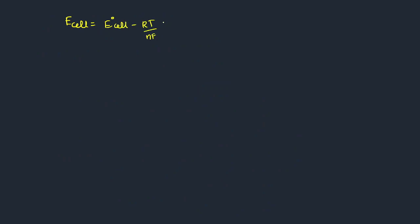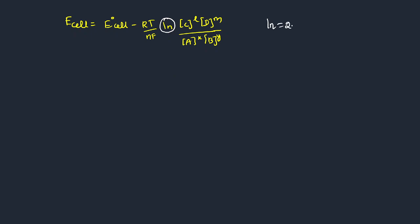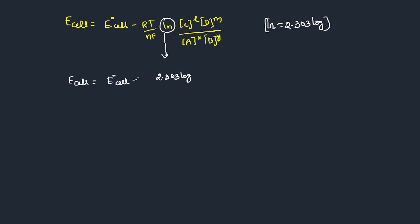So E_cell = E°_cell minus RT by nF times ln([C]^l[D]^m / [A]^x[B]^y). The ln is converted to 2.303 log. So multiplying by 2.303: E_cell = E°_cell minus (RT / nF) × 2.303 × log([C]^l[D]^m / [A]^x[B]^y). This is the Nernst equation.